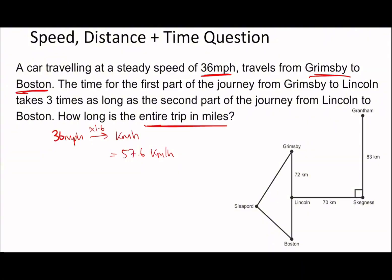The time for the first part is three times as long. The first part is 72 kilometers divided by 57.6, which is 1.25 hours.